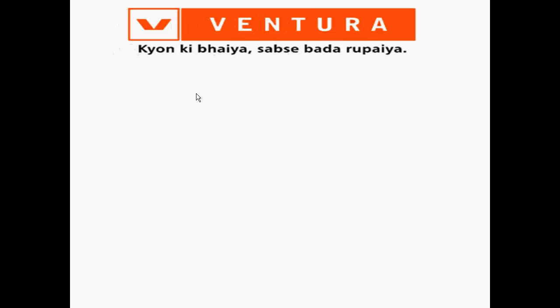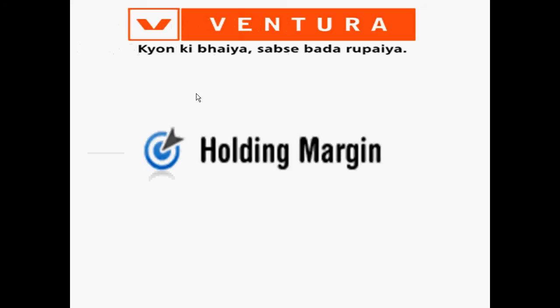In this session, we would like to guide you about Holding Margin Facility. Holding Margin is a facility wherein you can avail margin against securities. The security is held in your DP account (Depository account), VB account (Ventura Beneficiary account), and SR quantity (Security Receivable) can be used as margin for trading. Margin against securities can be provided based on script category.